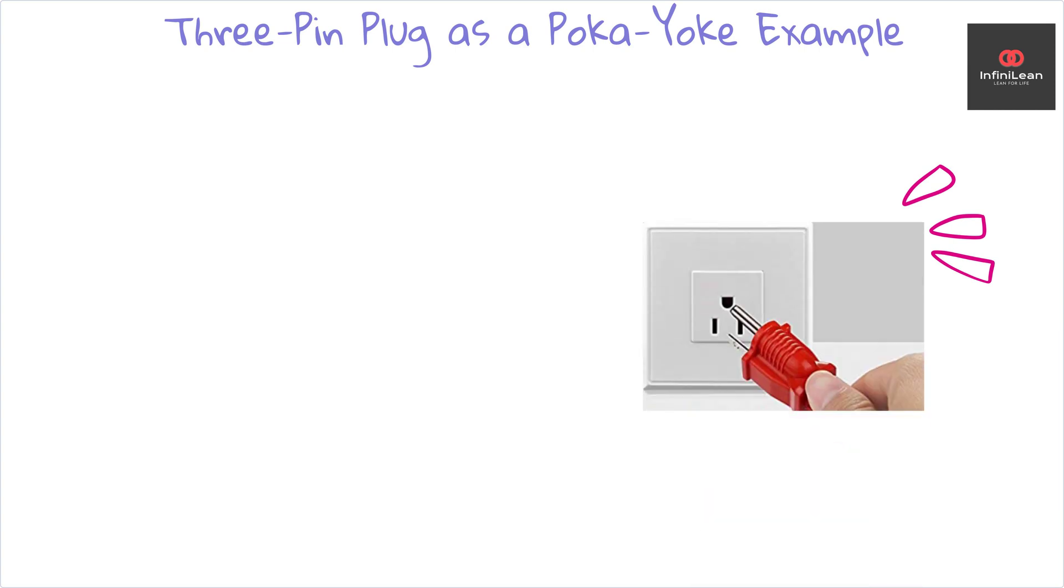Let's break down a classic poka-yoke example: the three-pin design of an electrical plug. This design makes it impossible to plug into the wrong socket, eliminating the chance of electrical accidents.